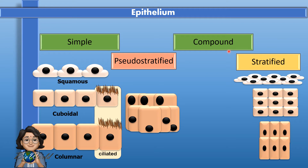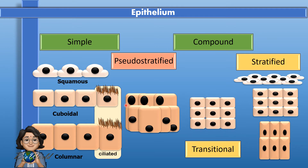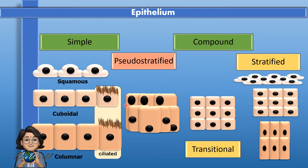Under the compound epithelial tissues, we also have one other category called transitional epithelium. Transitional epithelial cells look very much like stratified epithelium, but transitional epithelium can change their shape — they can actually be compressed and, when necessary, bounce back to normal.